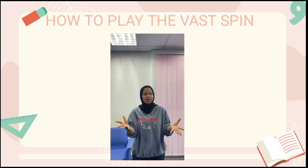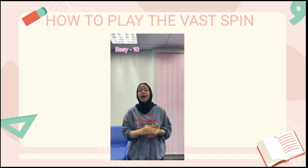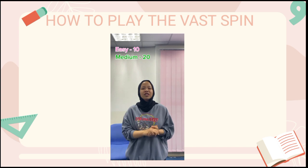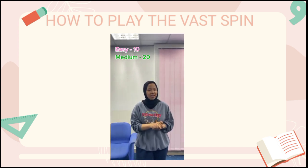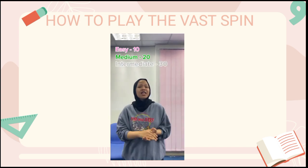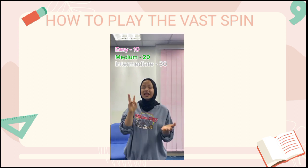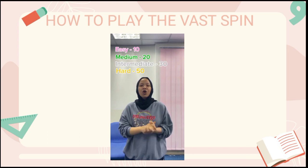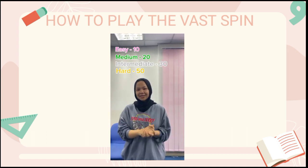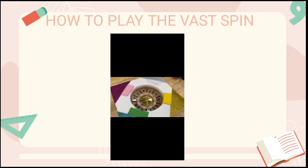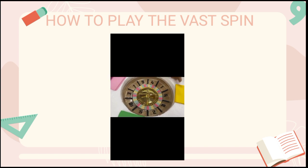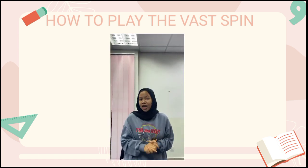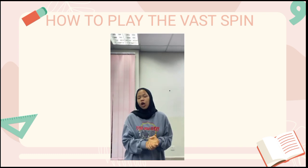The easy level, coloured pink, contains questions worth 10 marks. The medium level, coloured green, is worth 20 marks. The intermediate level, coloured silver, is worth 30 marks. The hard level, coloured gold, is worth 15 marks. For the winning condition, the group that accumulates the highest marks within 15 minutes will be recorded as the winner.